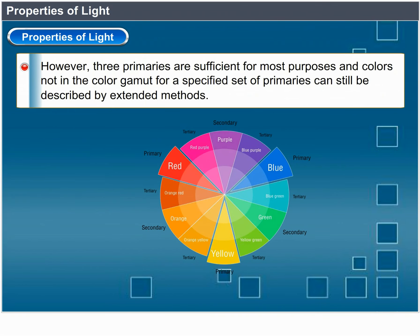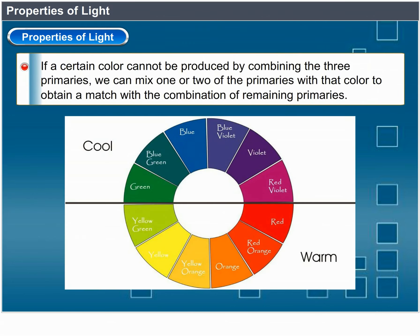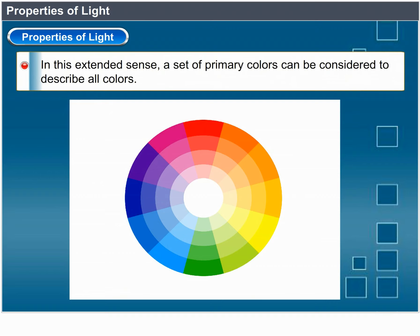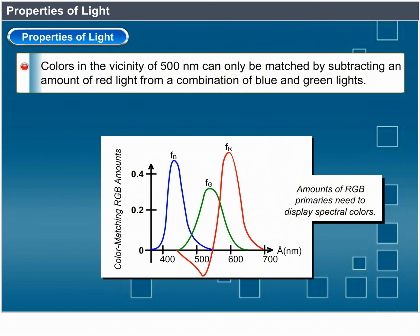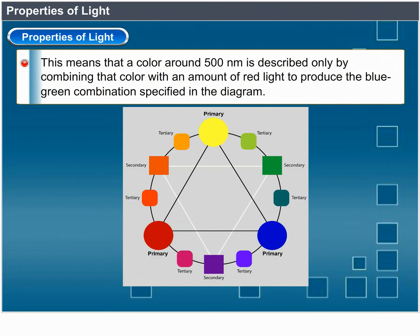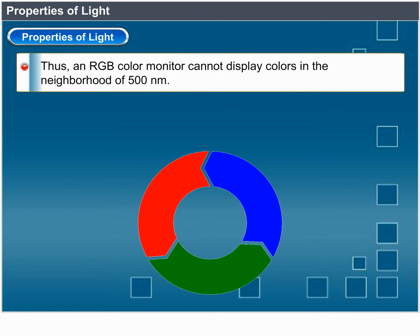No finite set of real primary colors can be combined to produce all possible visible colors. Nevertheless, three primaries are sufficient for most purposes; colors not in the color gamut can still be described by extended methods. If a certain color cannot be produced by combining the three primaries, we can mix one or two of the primaries with that color to obtain a match with the remaining primaries. A figure shows the amounts of red, green, and blue needed to produce any spectral color — these curves, called color matching functions, were obtained by averaging judgments of a large number of observers. Colors in the vicinity of 500 nm can only be matched by subtracting red light from a combination of blue and green. Thus, an RGB color monitor cannot display colors in the neighborhood of 500 nm.